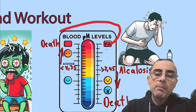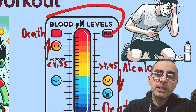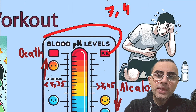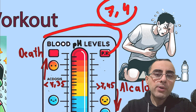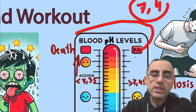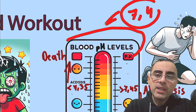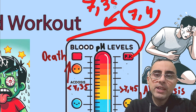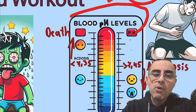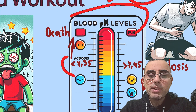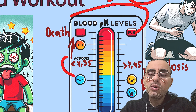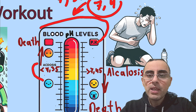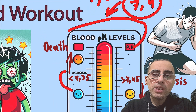Normally blood is slightly alkaline; normal blood pH is around 7.4. When a person works out, especially intensively, the pH drops. When it drops below 7.35, the blood becomes more acidic, and lactic acidosis develops.